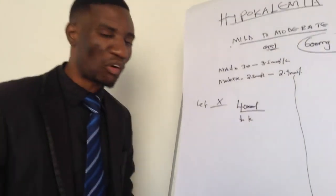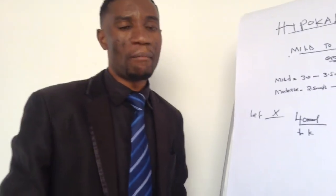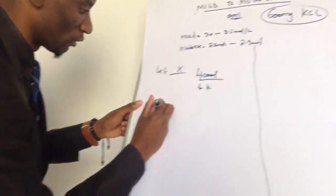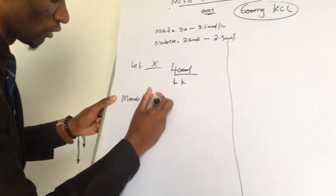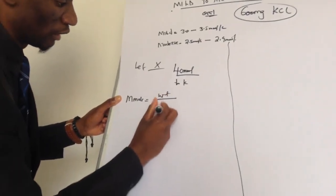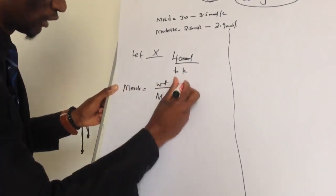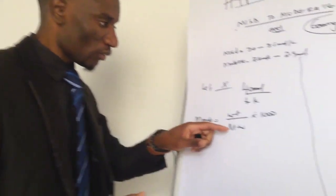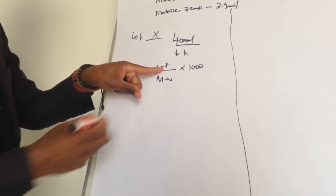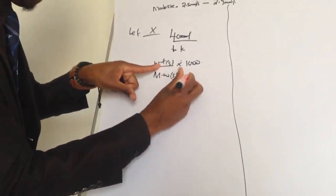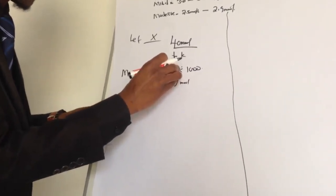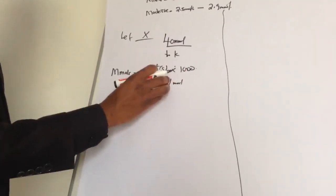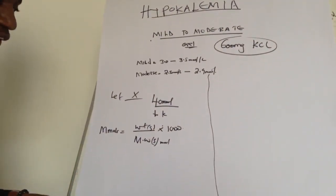We're going to work through this using the moles formula, then convert to millimoles. The formula is: millimoles = (weight of substance in grams ÷ molecular weight in grams per mole) × 1000. The weight divided by molecular weight gives us moles, and multiplying by 1000 converts that to millimoles.